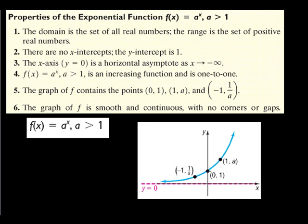Knowing what we just found out, the properties of exponential functions where a > 1: the domain is the set of all real numbers; there are no x-intercepts; the y-intercept is 1; the x-axis (y = 0) is a horizontal asymptote as x approaches negative infinity; f(x) = a^x where a > 1 is an increasing function and is also one-to-one; the graph contains the points (0, 1), (1, a), and (-1, 1/a); and the graph is smooth and continuous, with no corners or gaps.